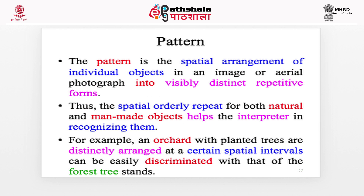Pattern is an important element — it is the spatial arrangement of individual objects in an image or aerial photograph into visually distinct repetitive forms. Specially ordered repetition for both natural and man-made objects helps the interpreter in recognizing them. For example, an orchard with planted trees is distinctly arranged at certain spatial intervals and can be easily discriminated from forest tree stands.